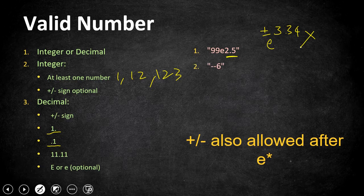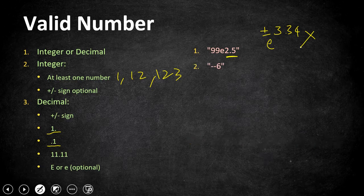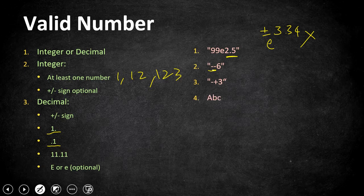The second invalid case is minus-minus-6, which has more than one sign. Only one plus or minus sign is allowed, and it must be at index 0. Case 3 is similar. Case 4 is 'abc' — it doesn't have any digits or 'e', just alphabets, so it is invalid. Only 'e' is allowed as a character, not 'a' or others.